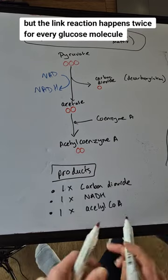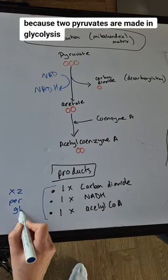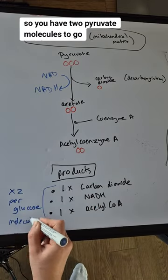But the link reaction happens twice for every glucose molecule, because two pyruvates are made in glycolysis, so you have two pyruvate molecules to go through.